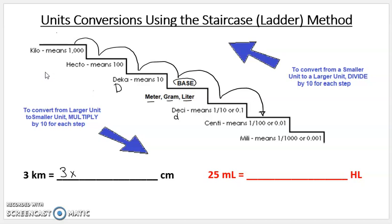And we're going to multiply it by 10 to the fifth power. And 10 to the fifth power is 3 times 10 to the fifth, which is 1 with five zeros, or 100,000. So 3 kilometers equals 3 times 100,000, or 300,000 centimeters.